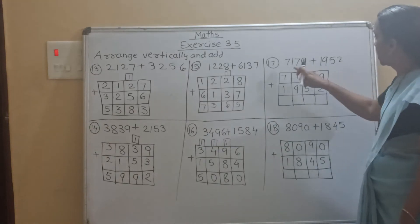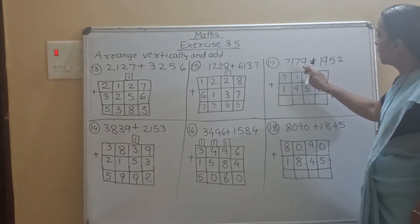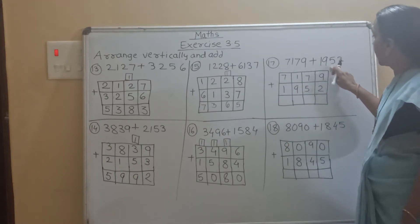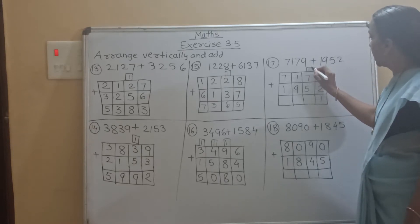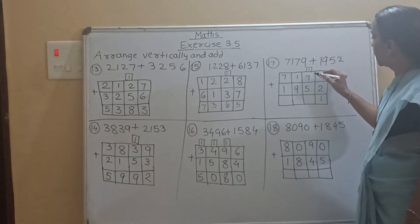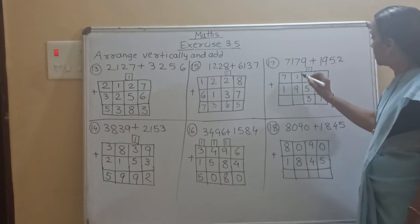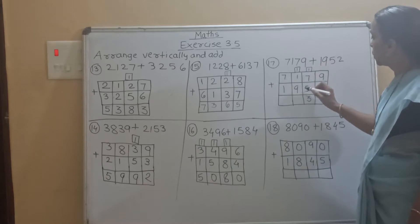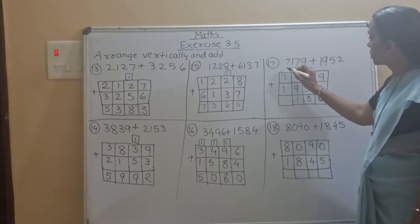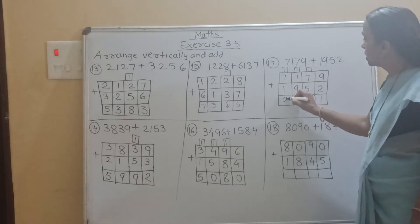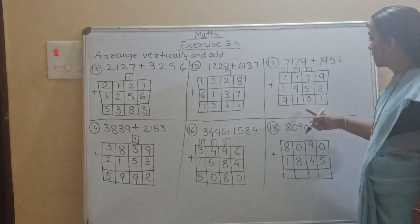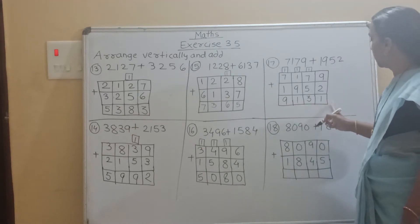Now see the 17th question: 7179 plus 1950. So 9 plus 2 is 11, carry 1. Write down carry here. Then 7 plus 1 is 8, 8 plus 5 is 13, carry 1. Then 1 plus 1 is 2, 2 plus 9 is 11, carry 1. Then 7 plus 1 is 8, 8 plus 1 is 9. So our answer is 9131.